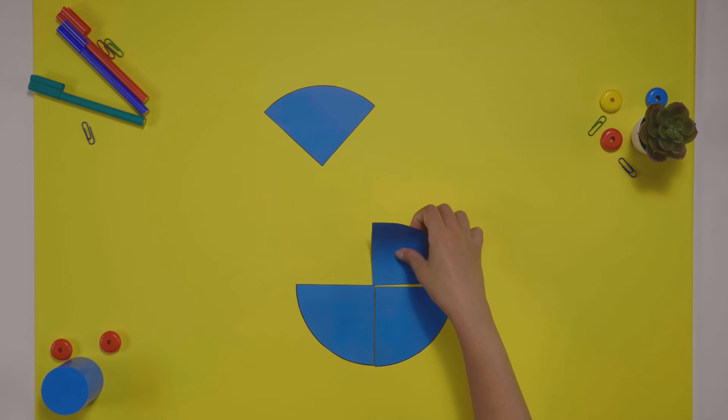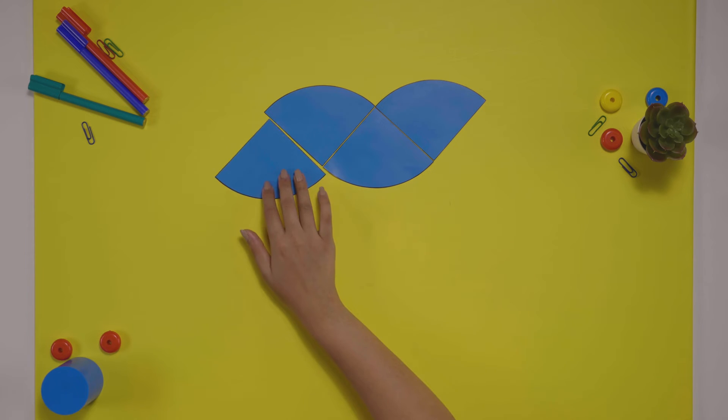Take the second part and flip it. These two are just the radius of the circle, so it will perfectly align. Similarly, place the remaining two parts.